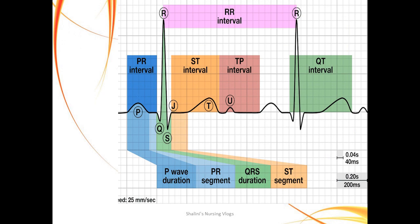Now let's look at some specific ECG terms. A wave is either a positive or a negative deflection from the baseline. So P, Q, R, S, T, and U are all waves visible in this picture.